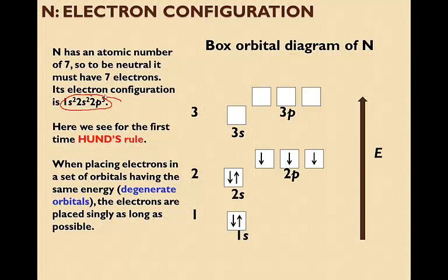This is the first time we've seen Hund's rule. When placing electrons in a set of orbitals having the same energy, which is called degenerate orbitals, the electrons are placed singly as long as possible.